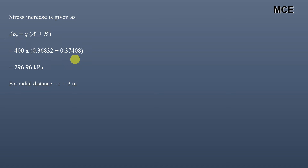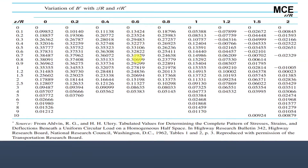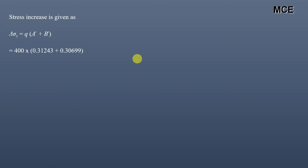For a radial distance of 3 meters, Z/R equals 0.8 and r/R equals 3/5 equals 0.6. From the table, for Z/R equals 0.8 and r/R equals 0.6, the value of A prime is 0.31243 and B prime is 0.30699. The stress increase equals 400 multiplied by (0.31243 plus 0.30699), which is 247.77 kilopascal.